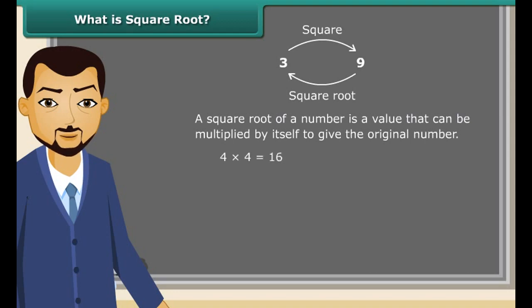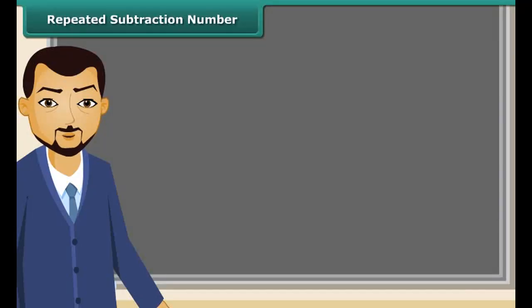Square root is an inverse operation of squaring. It is a value that can be multiplied by itself to give the original number. So, we can say when 4 is multiplied by 4, we get 16 which means 4 is a square root of 16. Square root is represented by a special symbol. It is called the radical. We can use it like this. Square root of 25 is 5.